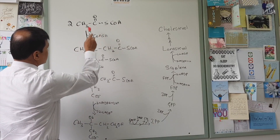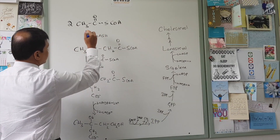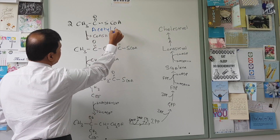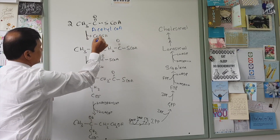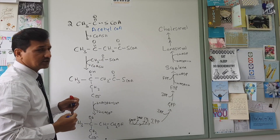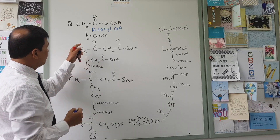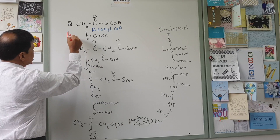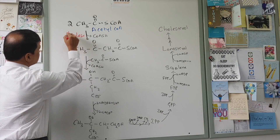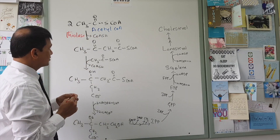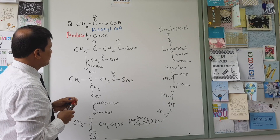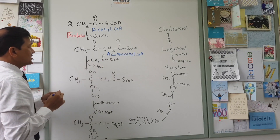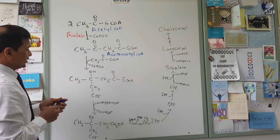In the cytoplasm, 2 molecules of acetyl-CoA condense with one another. This condensation is carried out by a thiolase enzyme, which joins the two acetyl-CoA molecules together to form acetoacetyl-CoA.